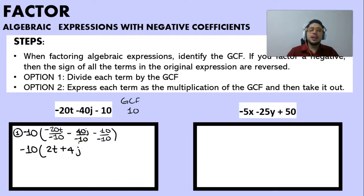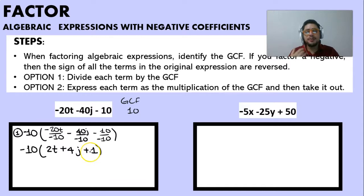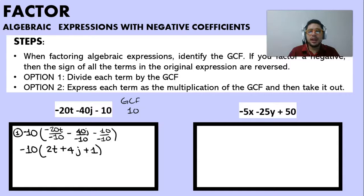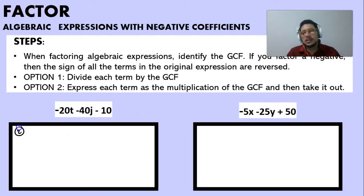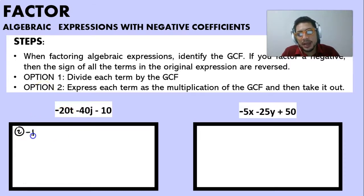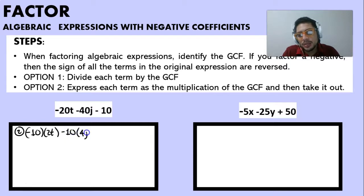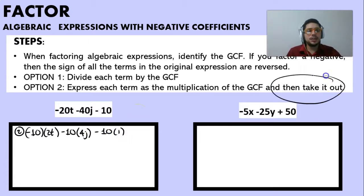So: minus 20 divided by negative 10 is 2T, minus 40 divided by minus 10 is plus 4J, and minus 10 divided by minus 10 is plus 1. We get minus 10 multiplied by (2T + 4J + 1), instead of having every term inside the parenthesis be negative. The second option is expressing them as a multiplication: minus 20T equals minus 10 times 2T, minus 40J equals minus 10 times 4J, and minus 10 equals minus 10 times 1.